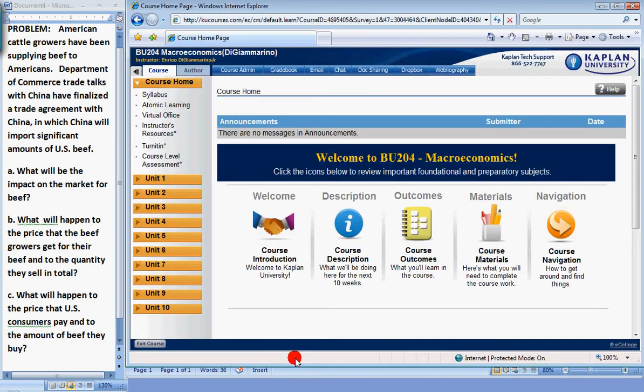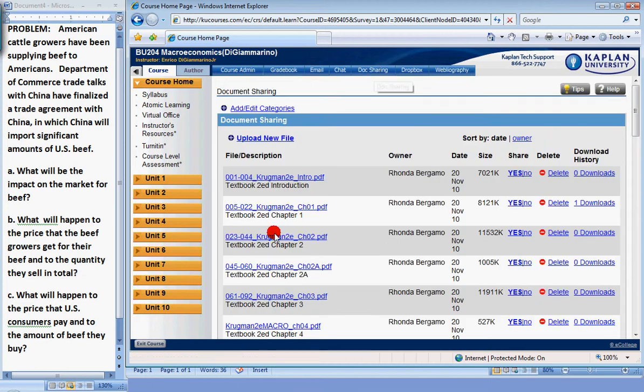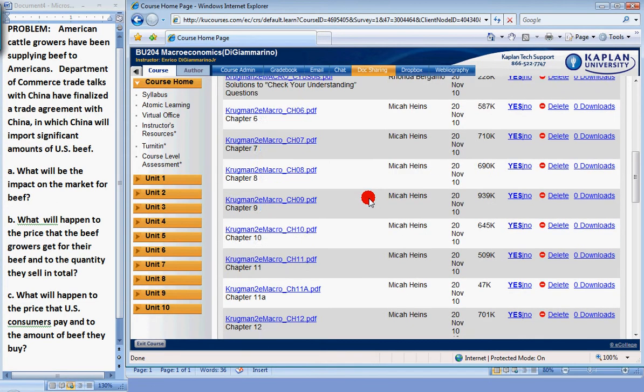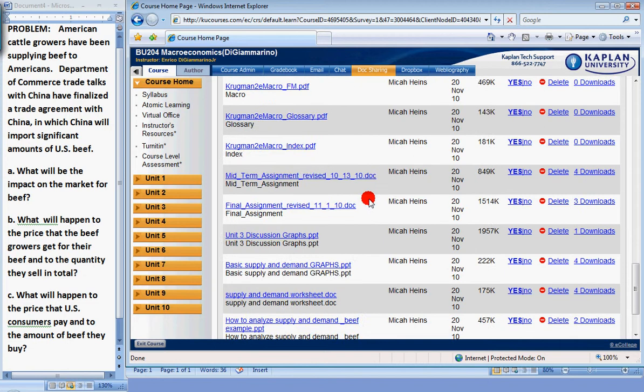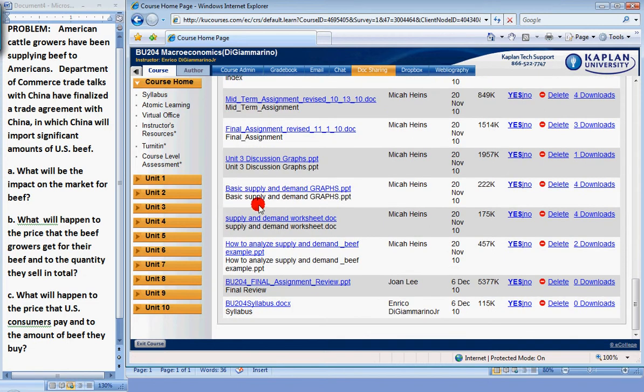We'll go back to our course home page, and as we go to DocSharing and scroll down, we'll see that in the same vicinity there is an entry that says Basic Supply and Demand Graphs, and it's a PowerPoint.